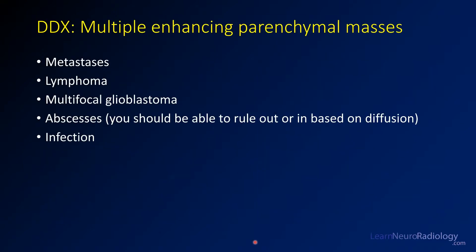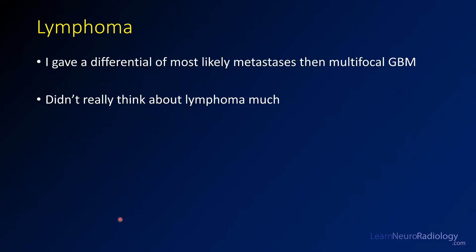With multiple enhancing masses, think about your differential: similar to before, but you're upgrading metastasis and lymphoma as top considerations, along with GBM. This turned out to be a case of lymphoma. When I was reading this case, I read it as metastasis and multifocal GBM — I didn't really think about lymphoma because it was multifocal and had some central areas of necrosis.